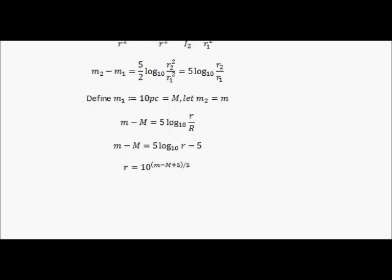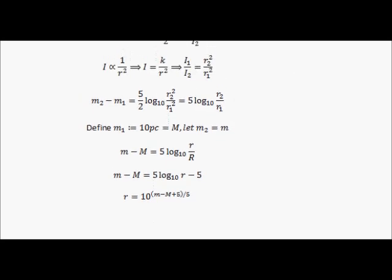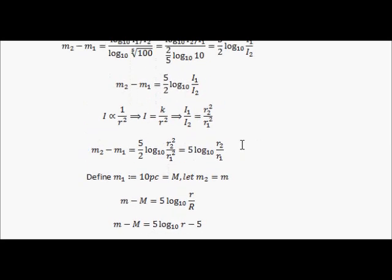Let's put this into our original equation. Now I've got m2 minus m1 is 5 over 2 log 10 r2 squared over r1 squared. I've taken the r2 over r1 squared and taken the power out and made it a coefficient, and then the twos cancel. That's just the basic quotient log rule.